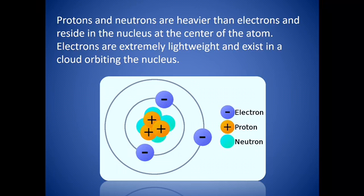Protons and neutrons are heavier than electrons and they reside in the nucleus in the center of the atom. The electrons are extremely lightweight and exist in the cloud that orbits the nucleus. So in your picture, you'll see that your nucleus, which is colored that pretty little blue color, is located in the center. Your protons, they're heavier and they reside there too. Your electrons, they're lightweight, so they're just out orbiting around this nucleus.